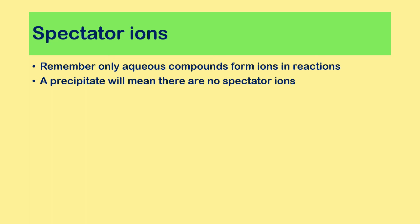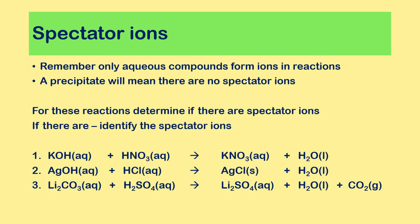Remember, only aqueous compounds form ions in reactions. If a precipitate forms, that means there are no spectator ions. Here are a few examples — determine first if there are any spectator ions, and if so, write down what those ions are. Pause the video, give yourself about five minutes to try the three questions, then restart the video.